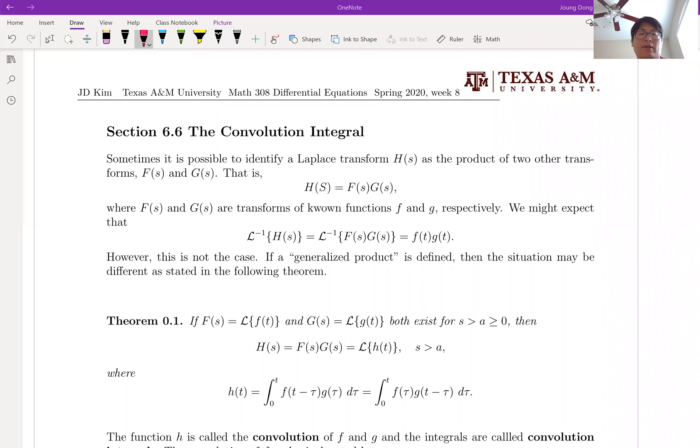Okay, let's talk about the convolution integral. So the idea is really simple. If I assume your H is the product form of F and G, then if it is possible, the inverse Laplace transform is also just like the product of the inverse Laplace transform of F and G. Then this is really beautiful, right? But think about it.